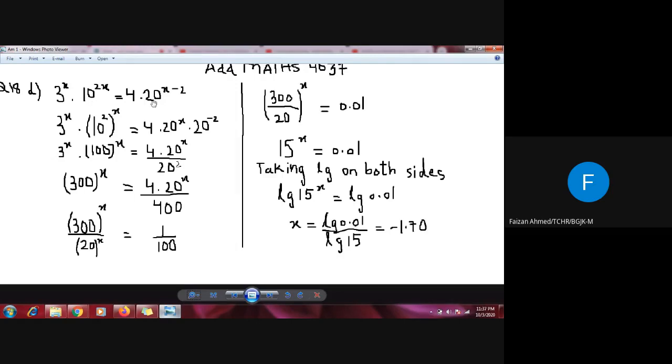First we will break the powers. This is 3 to the power x, which cannot be further simplified. This is 10 to the power 2x, so I can write it as 10 square whole power x using the double power law. This equals 4 and then 20 to the power x times 20 to the power minus 2.